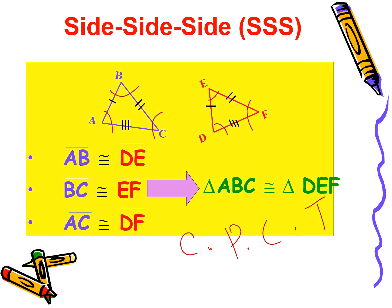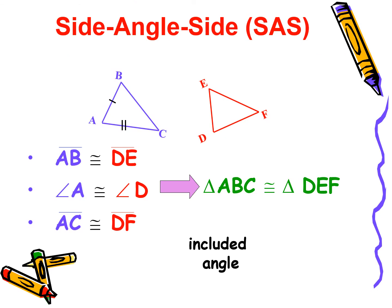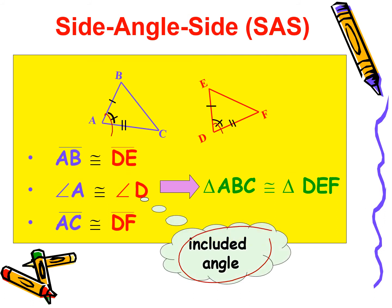The second condition is SAS (Side-Angle-Side). If two sides and an included angle of a triangle are equal to the corresponding two sides and included angle of another triangle, then the triangles are congruent. Like in this figure, if AB is congruent to DE, angle A is congruent to angle D, and AC is congruent to DF, then triangle ABC is congruent to triangle DEF.